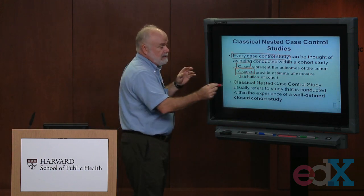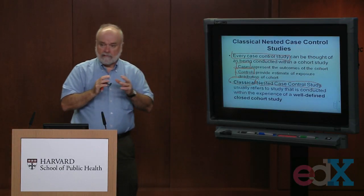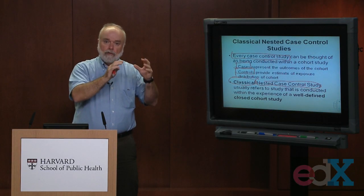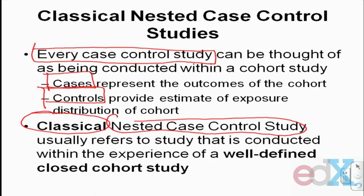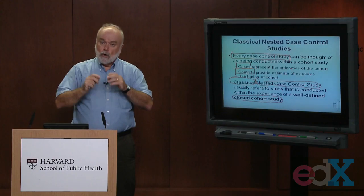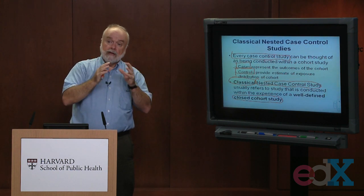What I want to talk about first is the nested case control study. Since every case control study can be considered linked or nested to an existing cohort study, let me put the adjective 'classical' in front of it. I'm talking about a case control study where we actually do know the previous cohort study that gave rise to our cases — and for now, let's suppose that previous study was a closed cohort study.